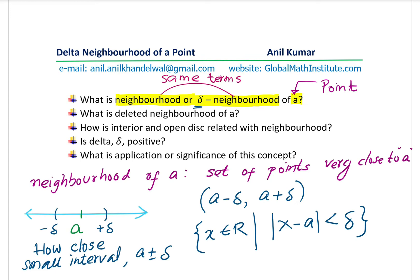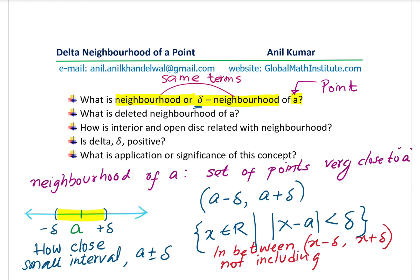In other words, the neighborhood is everything from A minus Delta to A plus Delta. In mathematical language, we say it is the set of real numbers X such that the absolute value of X minus A is less than Delta. That specifically defines the term neighborhood — everything in between, but not including the extremes.